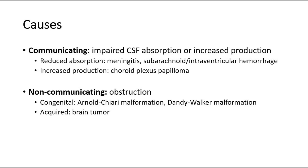After finishing our short case presentation, the examiner might ask some questions in the discussion part, including what is the cause of hydrocephalus. There are two types: communicating and non-communicating. For the communicating type, there is no obstruction. The cause is either due to impaired absorption or increased production of cerebrospinal fluid. Reduced absorption can be due to meningitis, or subarachnoid or intraventricular hemorrhage. Increased production may be due to a choroid plexus papilloma.